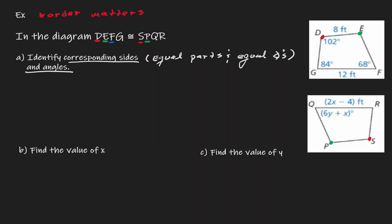And if we go once further, then angle F is congruent to angle Q. And finally, angle G is congruent to angle R. So we can start naming them. In terms of corresponding angles, we have the following.